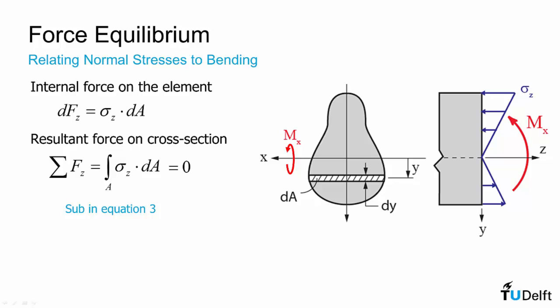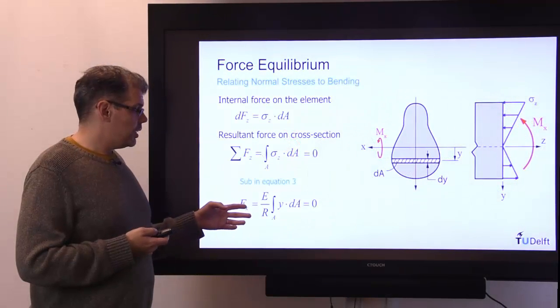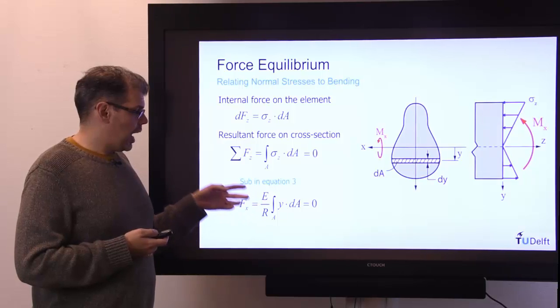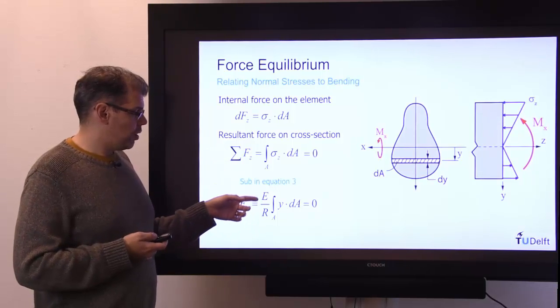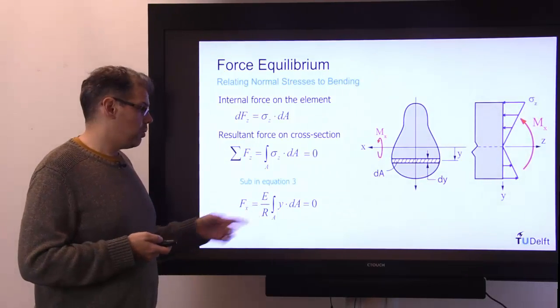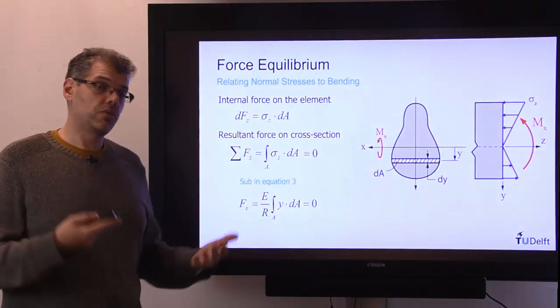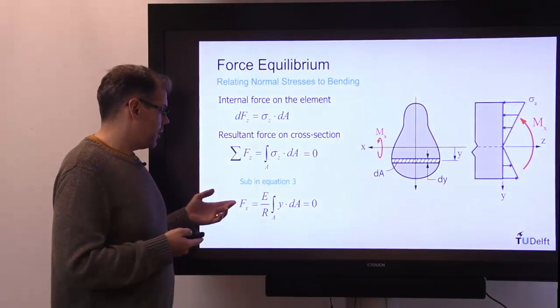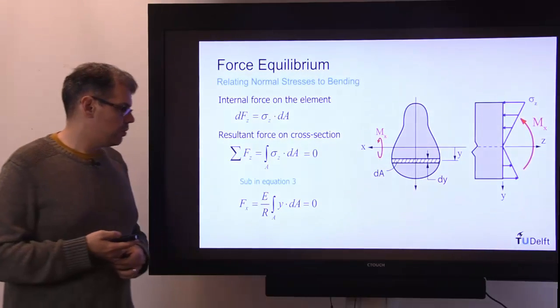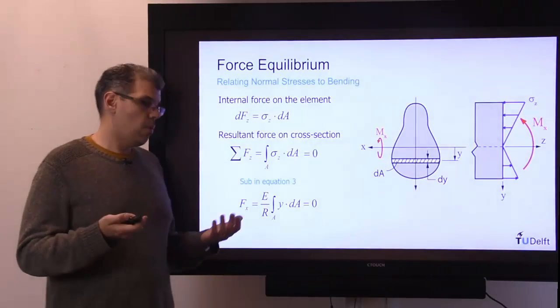If we substitute in equation three from the previous video, we derived a relationship for sigma z. We had that sigma z is e over r times y. What we see is that at a specific cross section, our Young's modulus will be constant, our radius will be constant, so we can remove that from the integral, and we get fx is equal to e over r times the integral of y da.